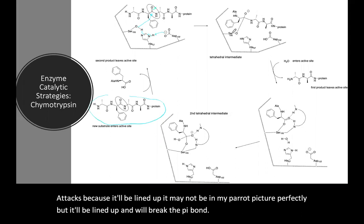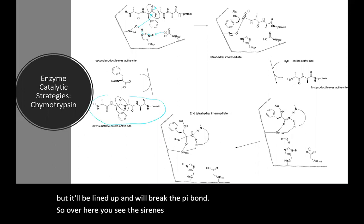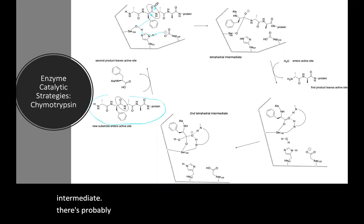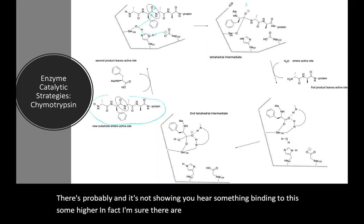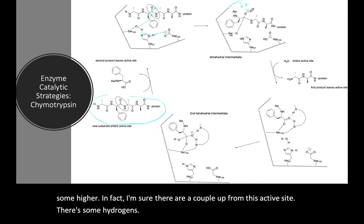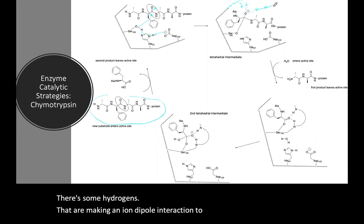So over here you see the serine is now attached. So this is a temporary covalent bond and we have a tetrahedral intermediate. There's probably something binding to this. In fact I'm sure there are a couple of hydrogens from this active site that are making an ion-dipole interaction to stabilize that formed alkoxide there.